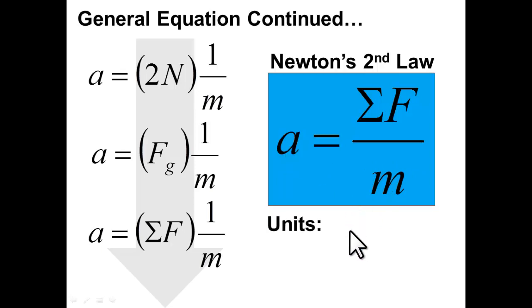When we look at the units, if we take the sum of the forces in newtons divided by a mass in kilograms, that's newtons per kilogram, it does give us units of meters per second per second.